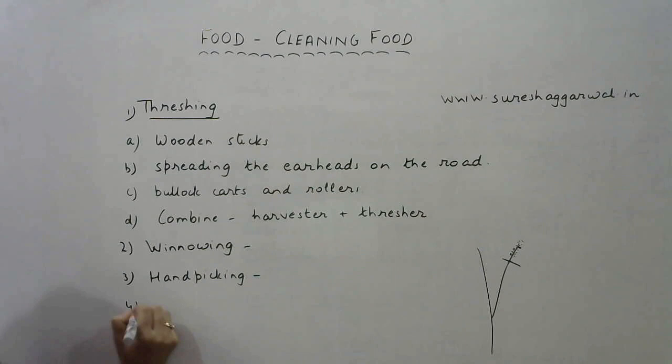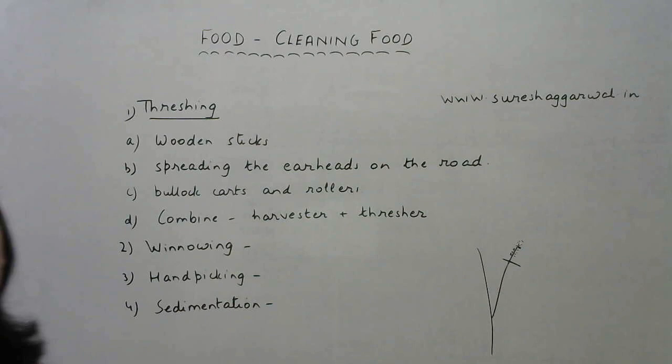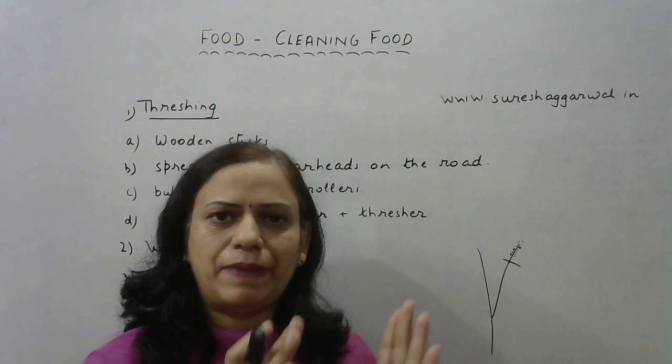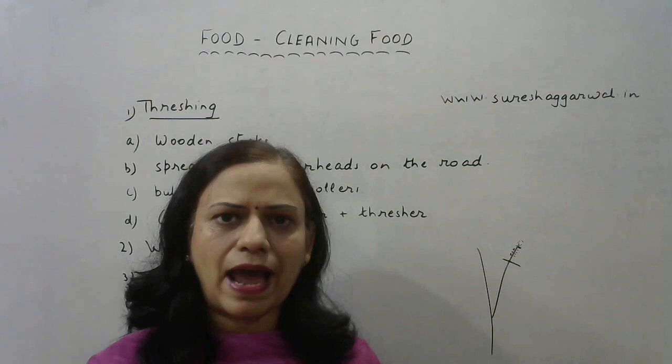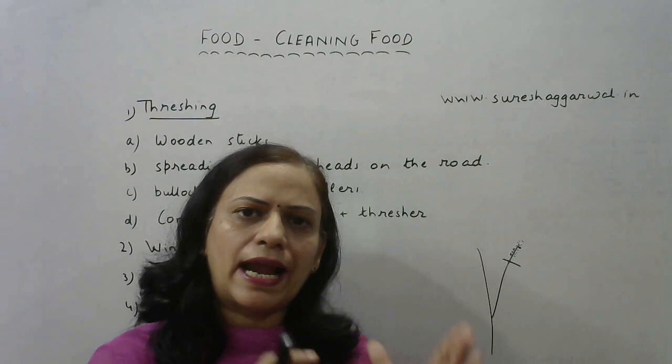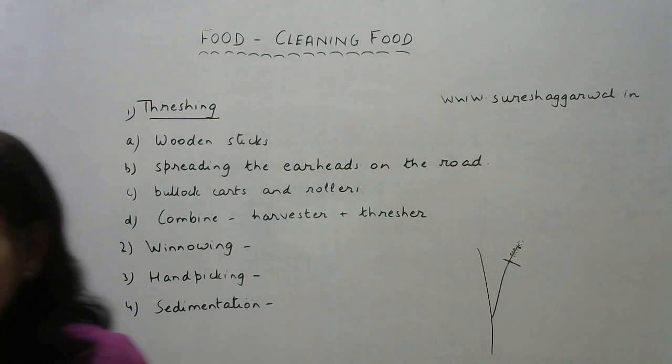The next method is sedimentation, generally used for liquids. For example, to separate sand from water, the utensil containing dirty water is left undisturbed for some time. The sand, being heavier, settles down due to gravity, and clean water is left on top. That clean water is then poured out — a process known as decantation — leaving the impurities behind in the original container.